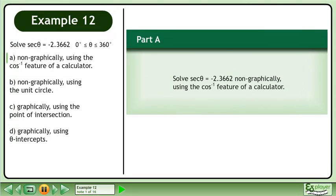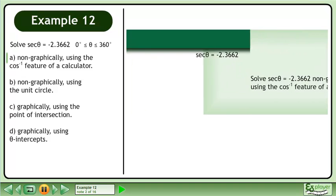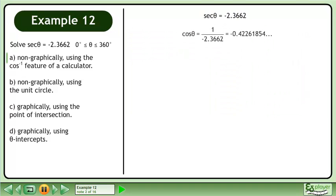Solve secant theta equals negative 2.3662 non-graphically using the cosine inverse feature of a calculator. Rewrite the equation as cos theta equals negative 0.42261854.